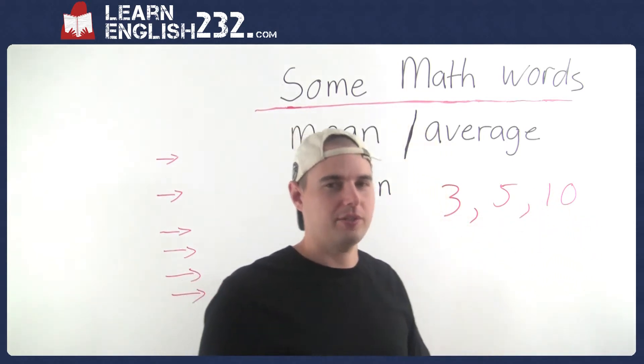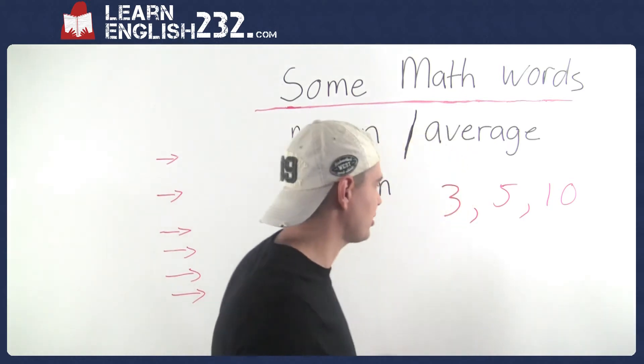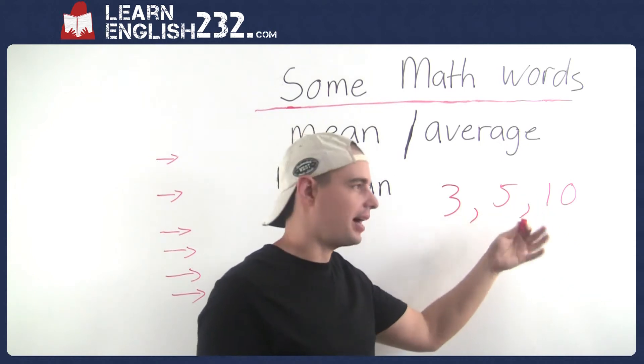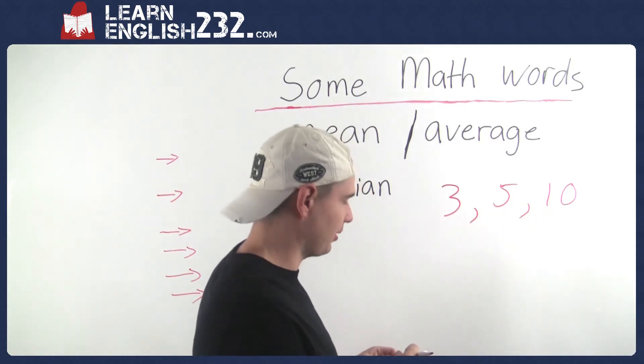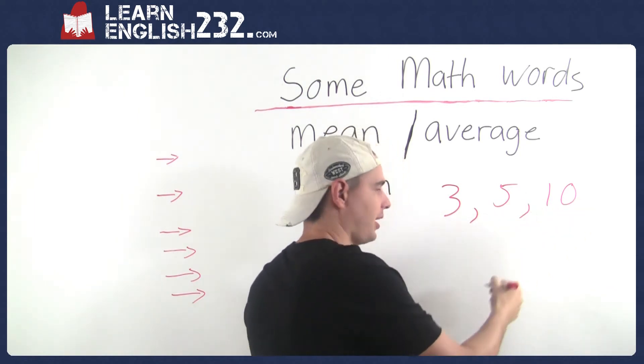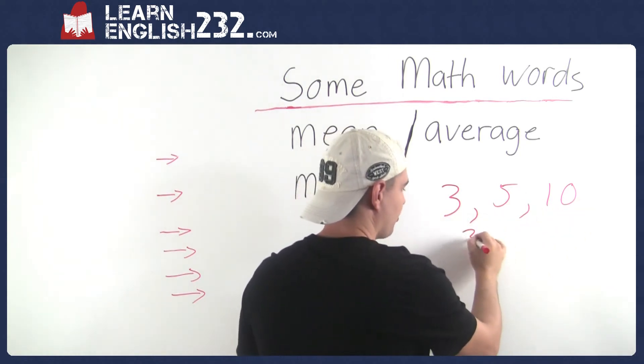You just add them up: three plus five plus ten, and divide it by the number of numbers. So three plus five is eight, eight plus ten is eighteen. So three plus five plus ten is eighteen.